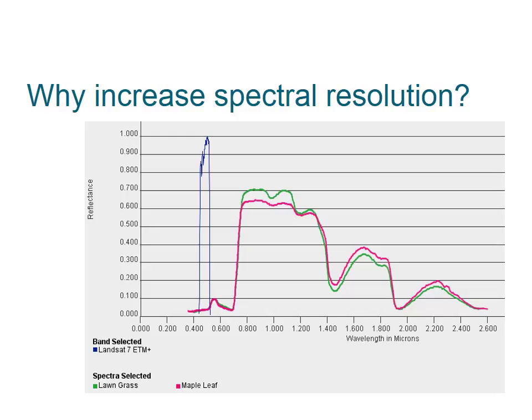By examining this graph we can see why spectral resolution is important. This graph shows long grass in green and maple leaves in pink, and displays the reflectance of those two materials over various wavelengths of light. Would you be able to tell the difference between lawn grass and maple leaves based on the reflectance in band one only? Band one is shown here in blue.